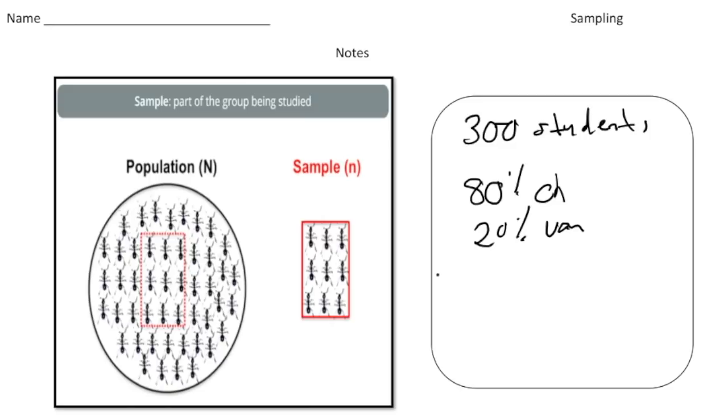All right, and one last thing. To conduct a sample, you have to use proportions. Let's write that down. Proportions. Remember, proportions are when you have two equal ratios. So let me give you an example. If you turn the page.